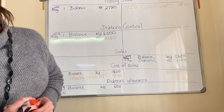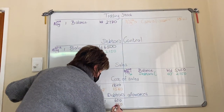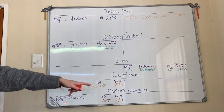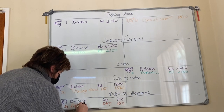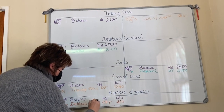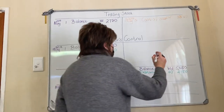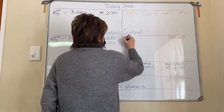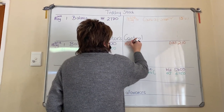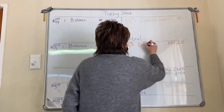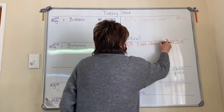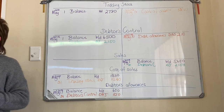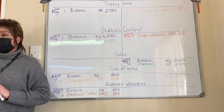The amount is 210 — are we correlating? 210, is that what you get? What's my contra account? These allowances were made to debtors, so it's debtors control. I debit debtors allowances and credit debtors control. This is out of my debtors allowances journal. The two accounts are debtors allowances and debtors control — allowances to debtors.